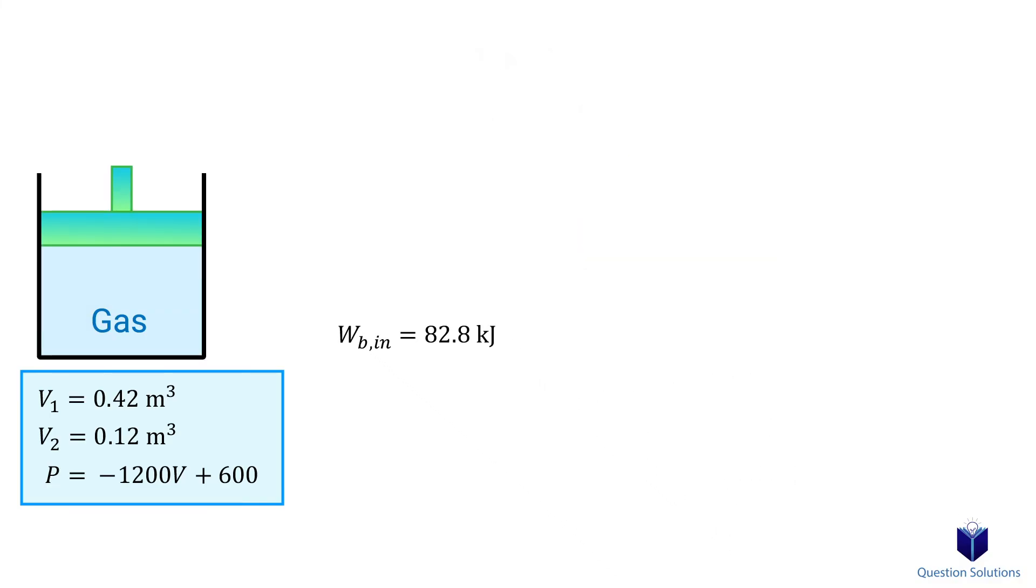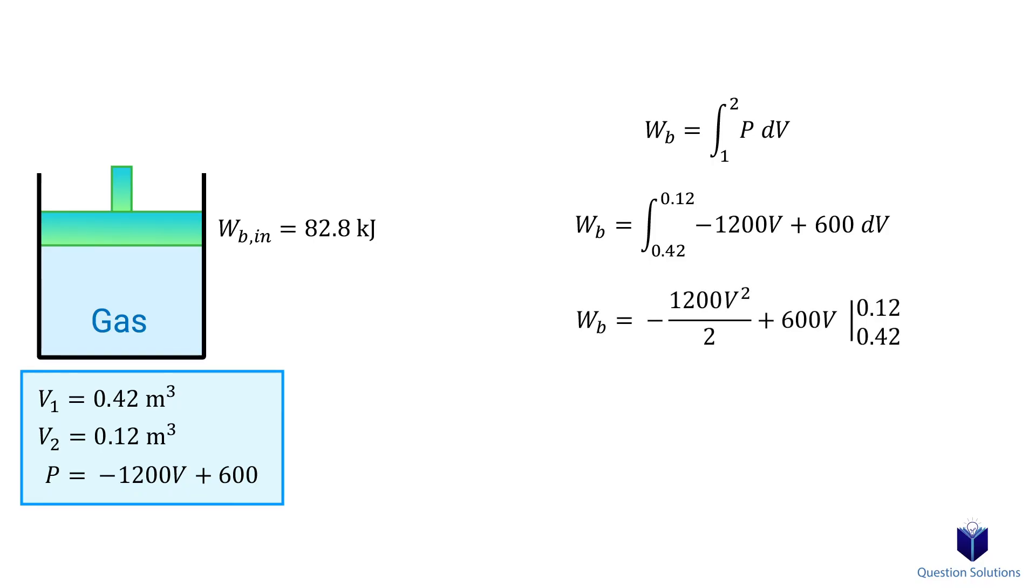Next we need to find the work again, but this time, by integration. Let's write our equation. Now we plug in the equation for pressure. The lower bound is the initial volume, and the upper bound is the final volume. Let's solve the integral, and as expected, we get the same answer. Again, it's negative because it's a compression process, so this is work input.